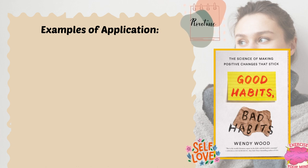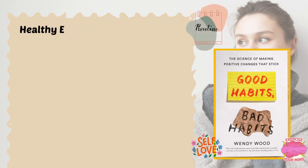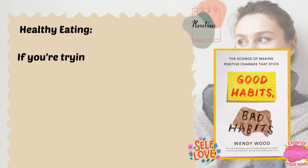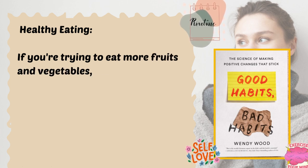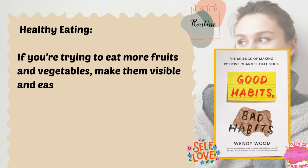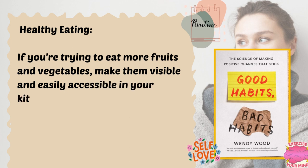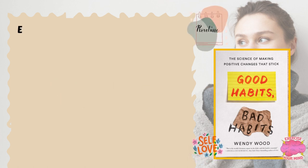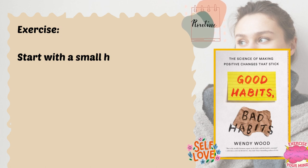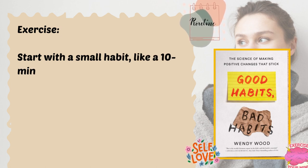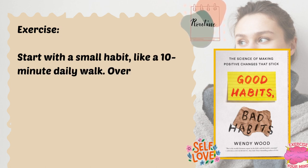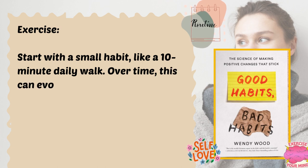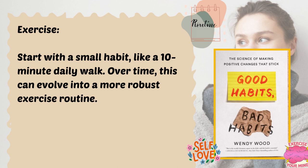Examples of application — healthy eating: if you're trying to eat more fruits and vegetables, make them visible and easily accessible in your kitchen. This external cue can prompt healthier eating habits. Exercise: start with a small habit like a 10-minute daily walk, and over time these can evolve into a more robust exercise routine.